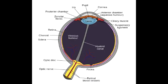Before we start talking about the Aqueous Humor Pathway, let's first look at the anatomy here. We see the sclera, the cornea, the canal of Schlemm, the trabecular meshwork, the iris, the dilator pupillae, the sphincter pupillae, the anterior chamber, the posterior chamber, the lens, the ciliary epithelium, and the ciliary muscle.